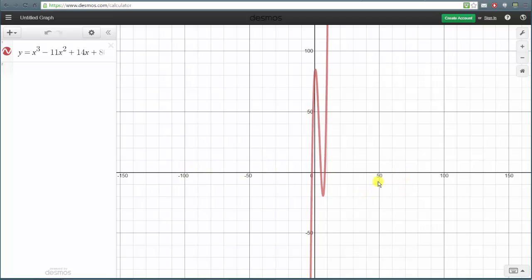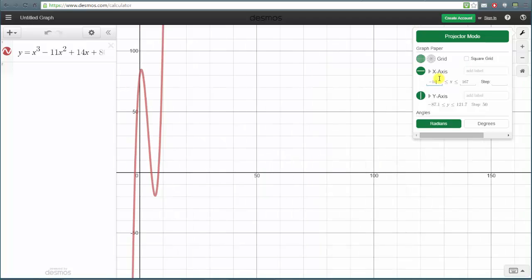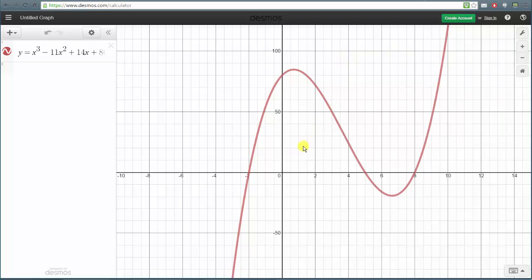Let's change the x minimum to negative ten and the x maximum to positive fifteen. We'll click on the wrench for graph settings, click on the x-axis minimum, change this to negative ten, and then change the x maximum to fifteen. Now if we close the graph settings, we have a very nice view of the cubic function where this high point will give us the local maximum and this low point will give us the local minimum.